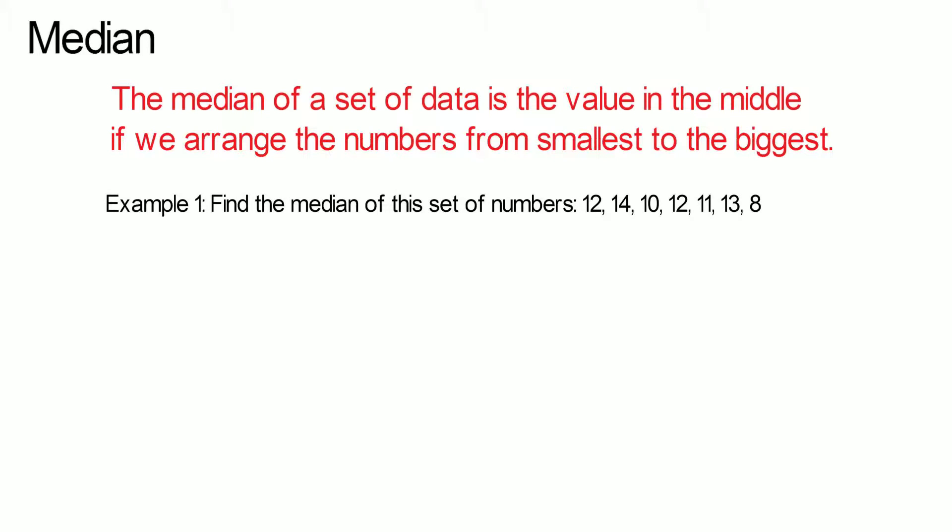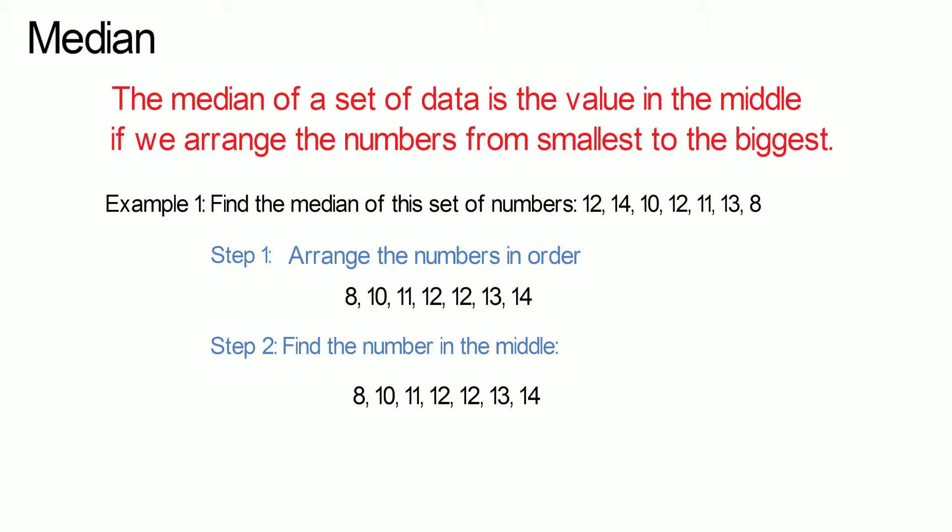Find the median of this set of numbers. Step 1: Arrange the numbers in order, smallest first. Step 2: Find the number in the middle. In this set of data, 12 is in the middle, and therefore 12 is the median.